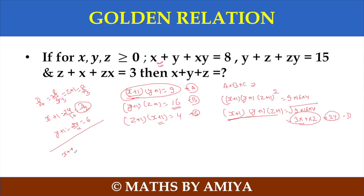What can I do? x plus y plus z, 1 plus 1 plus 1 is nothing but 3. And here what can I do? 8 by 3 plus 3 by 2 plus 6. LCM is nothing but 6. Here it will be 16, here it will be 9, here it will be 36. So total is nothing but 61 by 6.